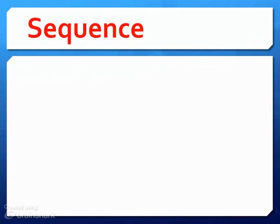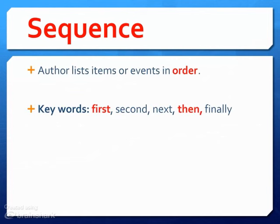The next type of text structure is sequence. This is when the author lists items or events in order. Sometimes it's in chronological order, which means it happened first, second, third, and then last. Some key words to look for are first, second, next, then, and finally. These types of transitions tell us that the information is being given sequentially in a specific order of how they happened.